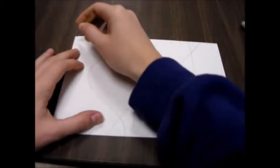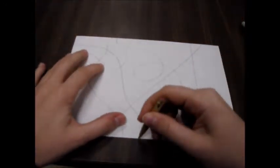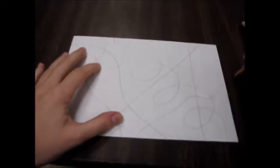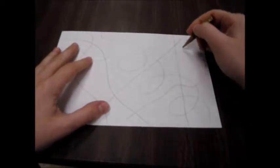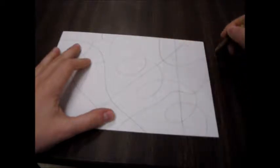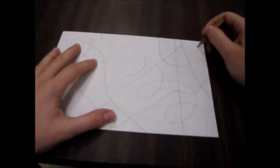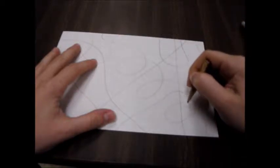Straight. Just keep making lines until you fill up the whole page and you only have small sections. So see this is a small section. This is not. That's a big section. So cut up all those big sections with lines until you have smaller sections.